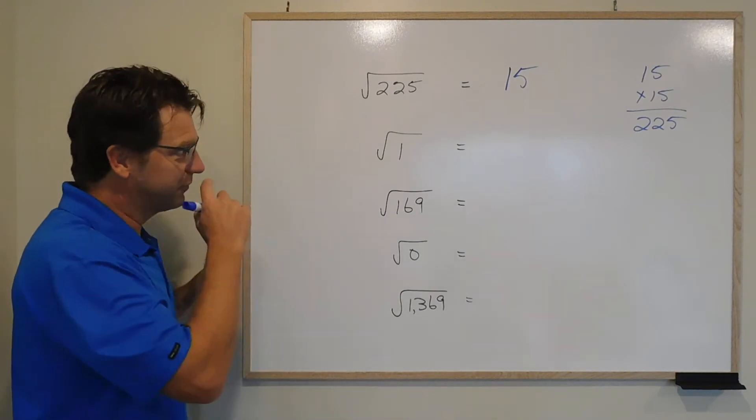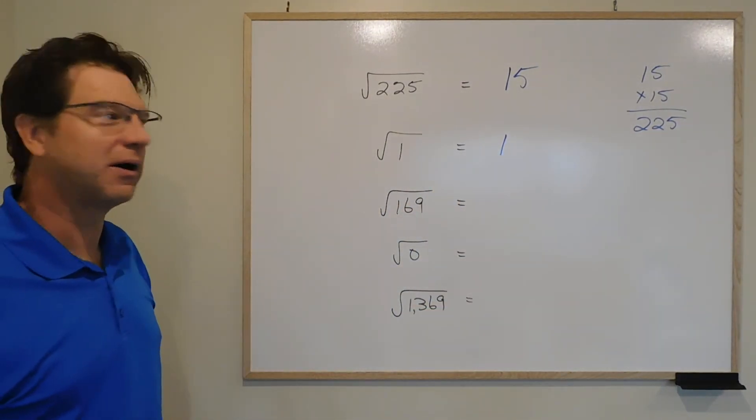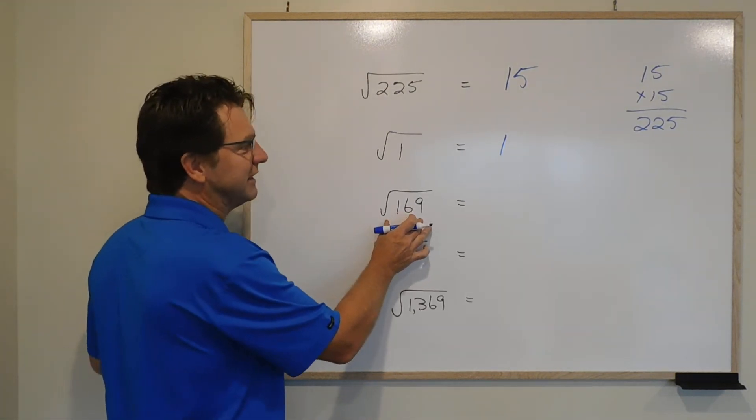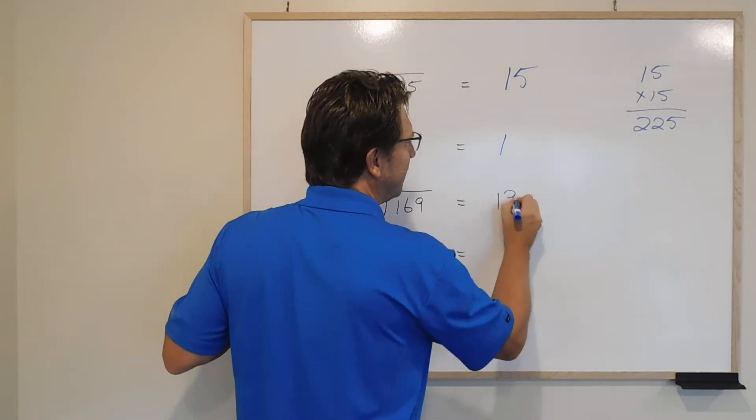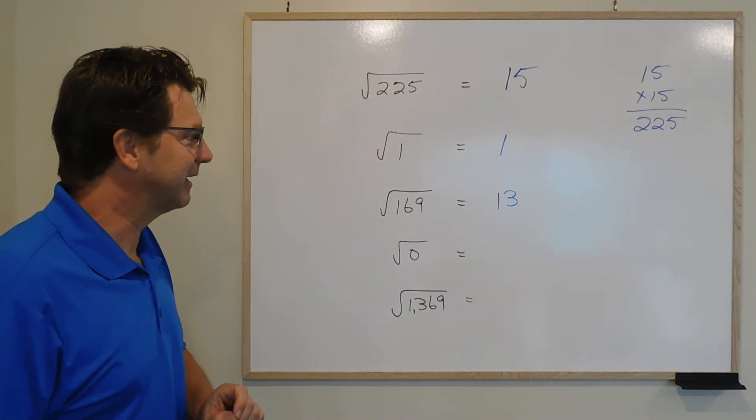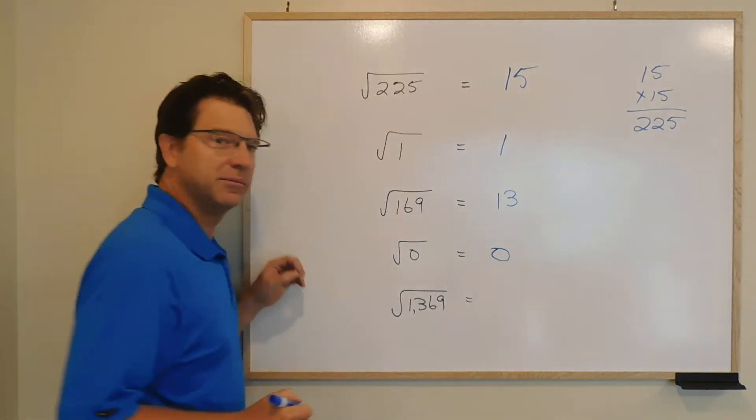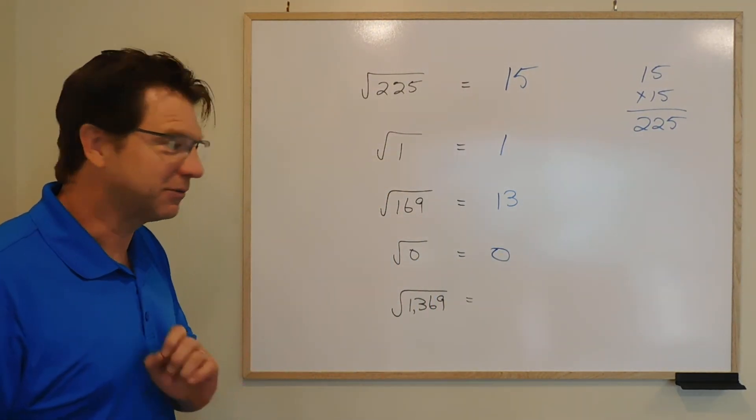In the same way, the square root of 1 is 1 because 1 times 1 equals 1. The square root of 169 is 13 because 13 times 13 equals 169. The square root of 0 is 0 because 0 times 0 equals 0.